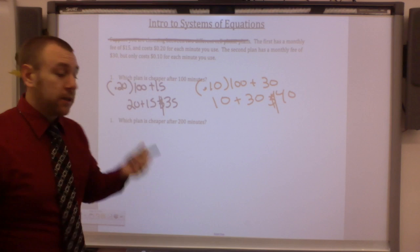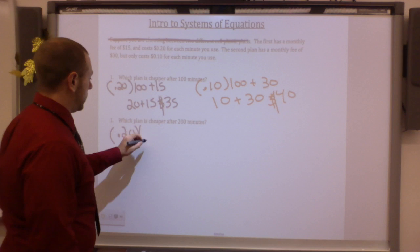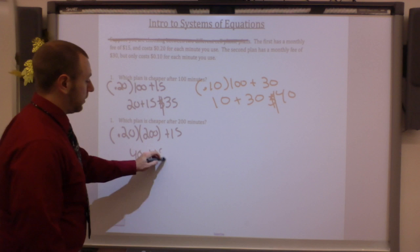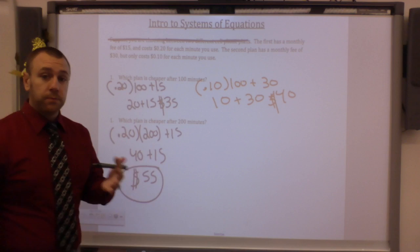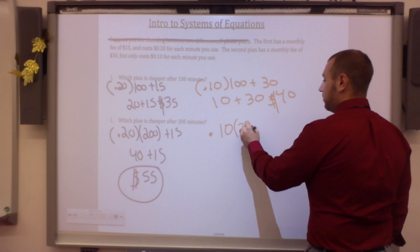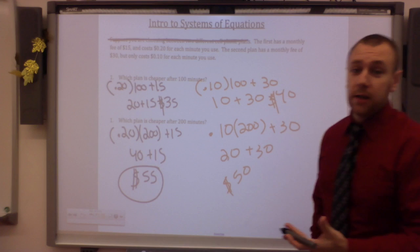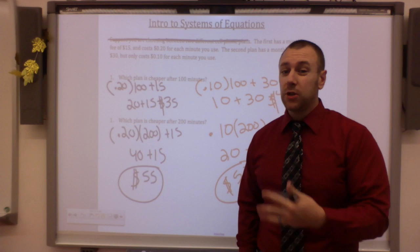But what about 200 minutes? Well, we'll repeat the process. Times 200 plus 15. Well, 0.20 times 200 is going to be 40 plus 15. That's $55 for plan one. For plan two, I would multiply by 200 plus 30. I would get 20 plus 30. And that's $50. So plan two is cheaper after 200 minutes.